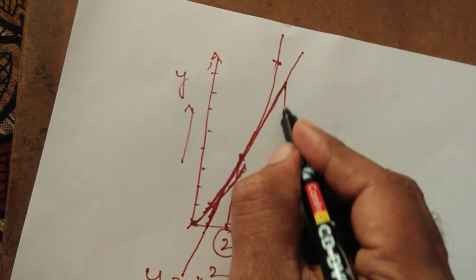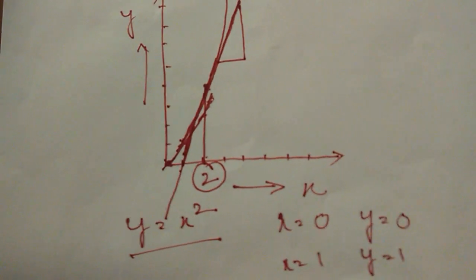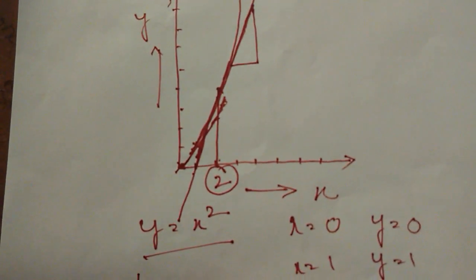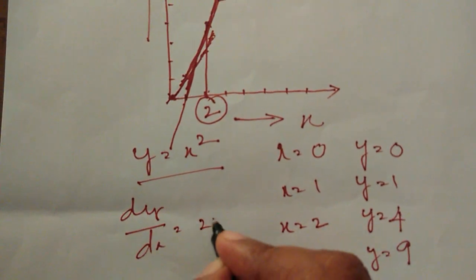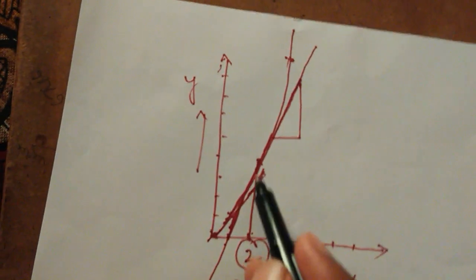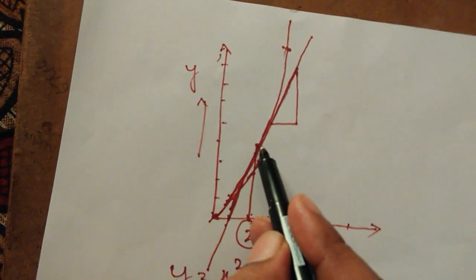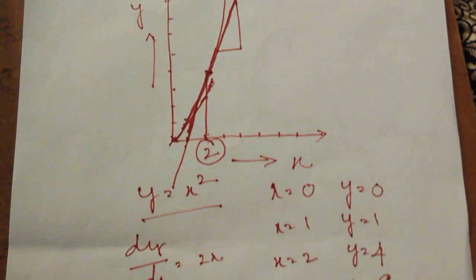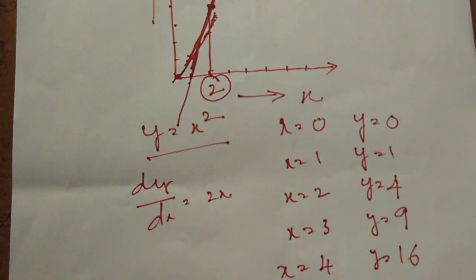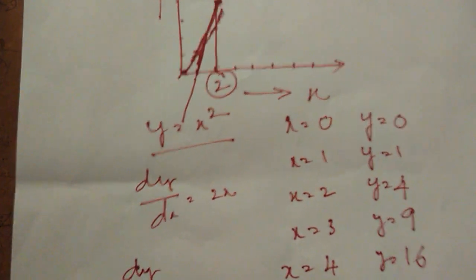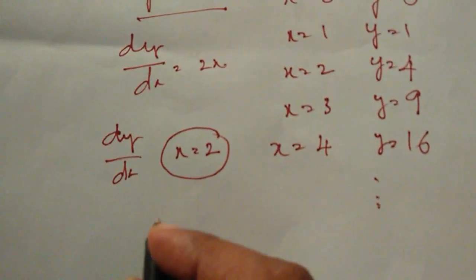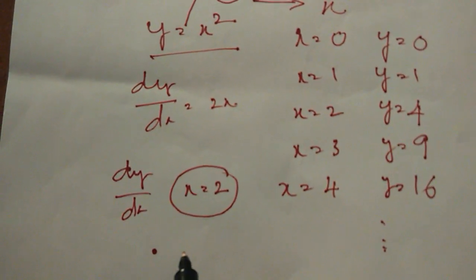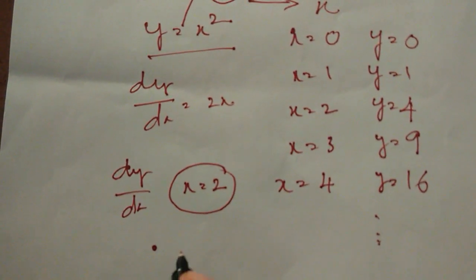So I have to find the slope for this. Our relation says dy by dx — when y is equal to x square, dy by dx is equal to 2x. I want to find the curve slope at the juncture where x is equal to 2, so dy by dx at x equals 2 would give 2 times 2, which is 4.